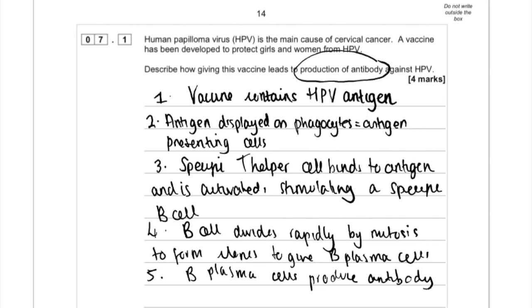The best way to approach these questions is just to bullet point your answers in a logical way. It makes it nice and clear for you to see that you've covered all of the points, and also for the examiner to mark.